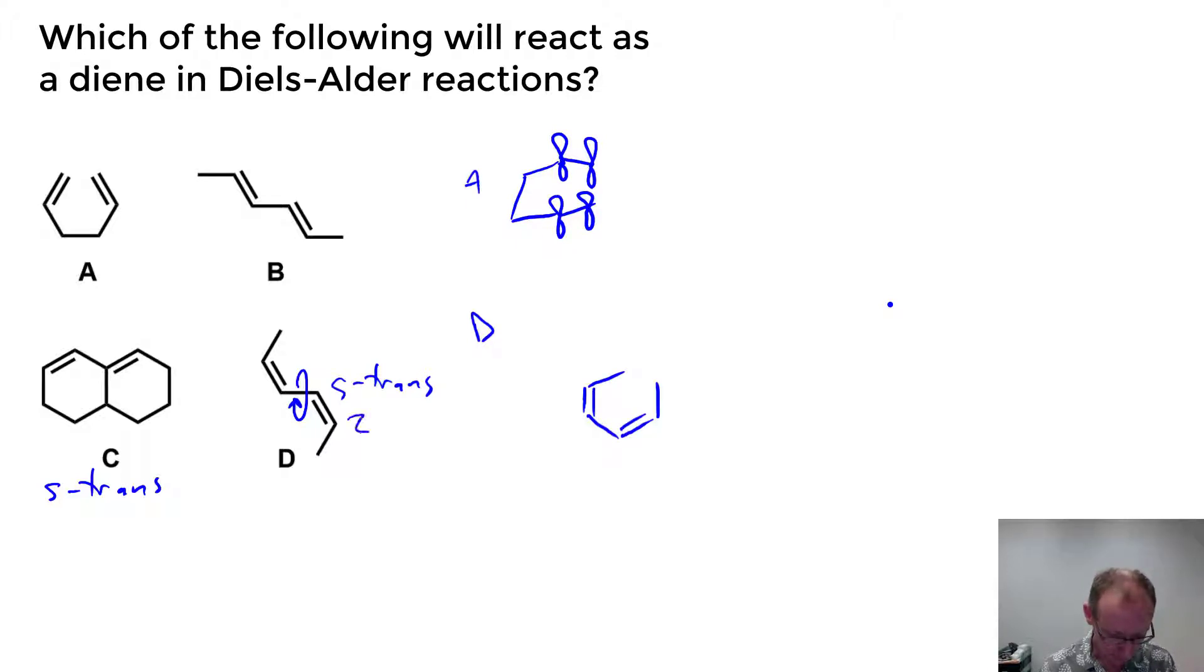Now if you look at these double bonds, they're Z configured and so we have to have Z configured in the s-cis conformation as well. And although we can draw that, it's actually pretty horrible because we've got this large steric clash between the methyl groups within that system and so that's very unfavorable.